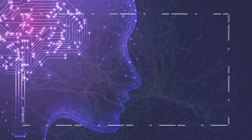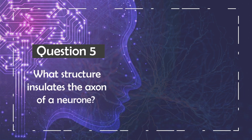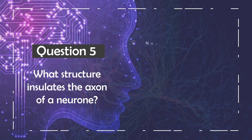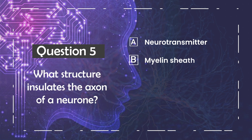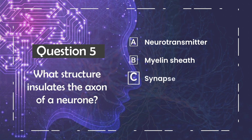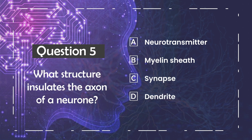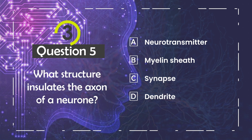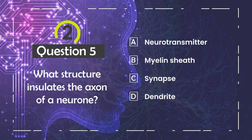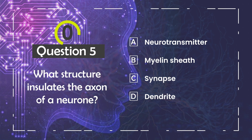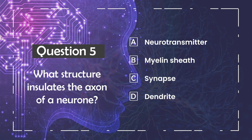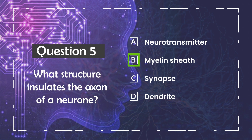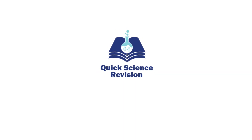Question number five: what structure insulates the axon of a neuron? Is it a) the neurotransmitter, b) myelin sheath, c) synapse, or d) the dendrite? The answer is b) myelin sheath.